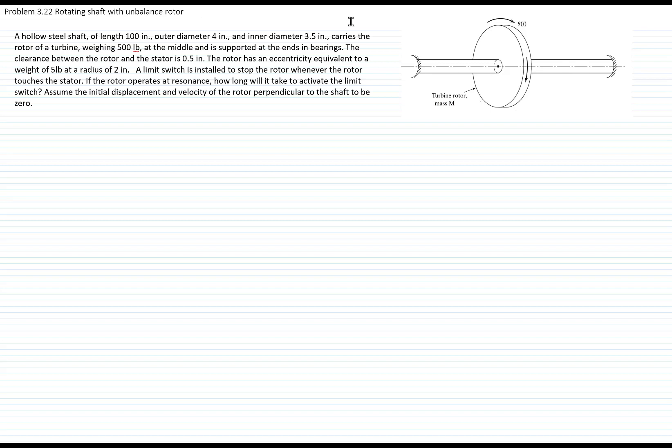A hollow steel shaft of length 100 inches with an outer diameter of 4 inches and an inner diameter of 3.5 inches carries a rotor of a turbine weighing 500 pounds, and at the ends we have two bearings.